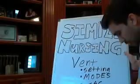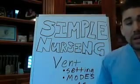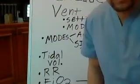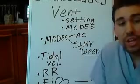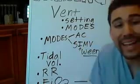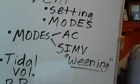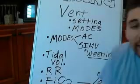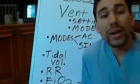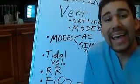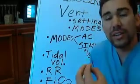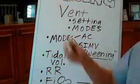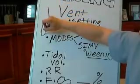For your vent settings and vent modes, there are two major modes. You have Assist Control mode, called AC mode. This AC mode is breathing fully for your patient — it's full-fledged breathing, making sure your patient is taking enough breaths. Your AC mode is pushing oxygen and air down into those respiratory tracts.